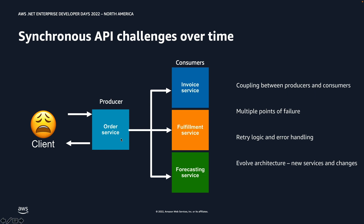What happens when you start adding more services that integrate with the order service? Let's say we've enhanced our system architecture and added two new services: fulfillment and forecasting. This architecture poses multiple challenges. Firstly, there is tight coupling between producer and consumer. The producer in this scenario is the order service that is creating a message, and the consumer is the one receiving the message and taking further action.